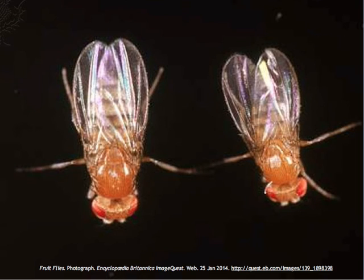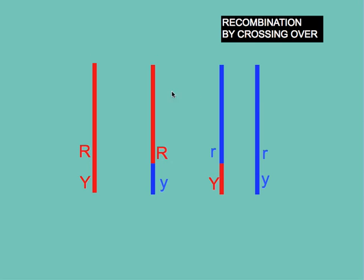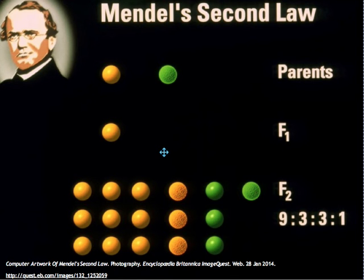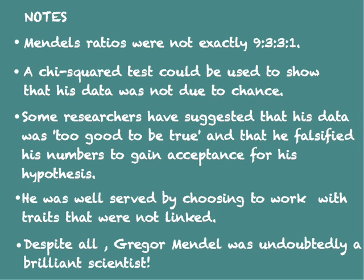Morgan's work with Drosophila, the fruit fly, showed that the likelihood of recombinants occurring is directly related to the distance apart of the linked genes on the chromosome. And if Mendel had chosen to work with linked genes, then his results would have been completely different. Yet, despite his good fortune and the accusations of falsifying data, Gregor Mendel was, for his reasoning and for his thinking alone, a truly brilliant geneticist and one of the great scientists of all time.